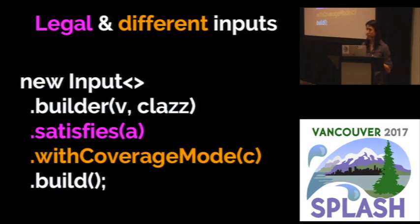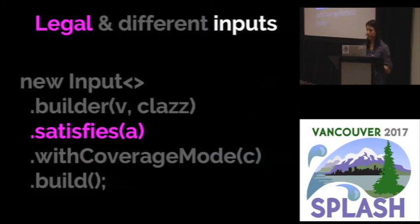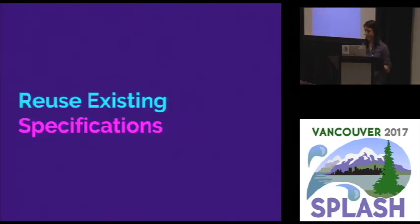We also made sure that we didn't have to extend the syntax in any way. So rather than make our own syntax for this, we just use a builder pattern, which developers are already really familiar with. So to say what's legal and different, they can just say that it satisfies some assertion A, and uses some constraint, which we called coverage modes. But I want to call out special attention to this satisfies A, because if we really ask developers to always write specifications, then there's a good chance that they wouldn't want to use our tool. But at Amazon, we actually found that we were able to reuse existing specifications.